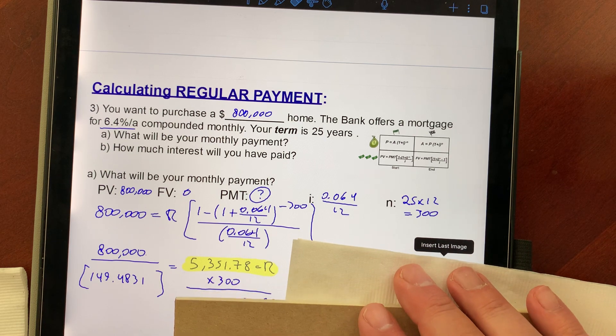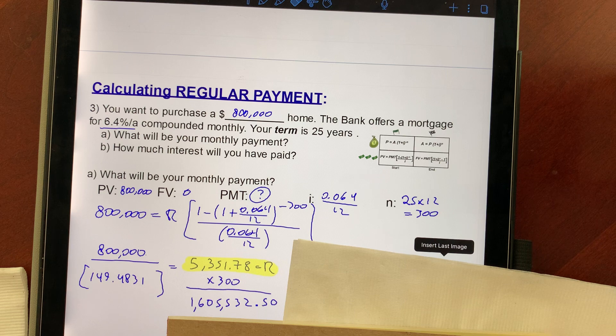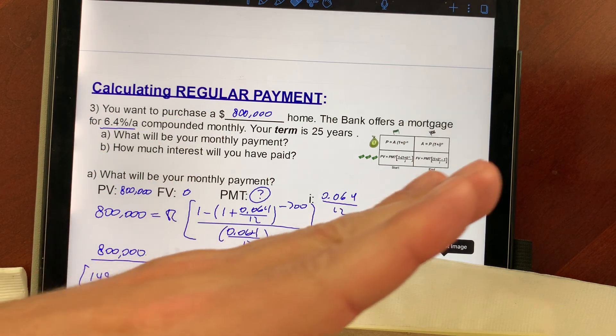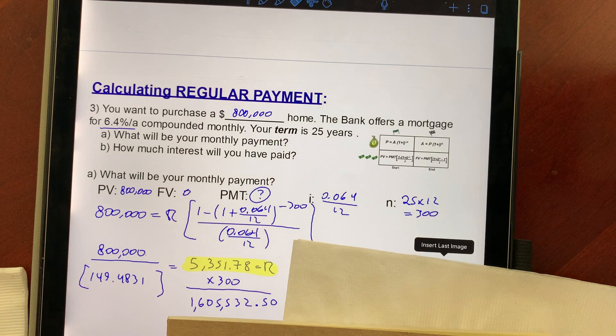So if you multiply by 300, it's $1.6 million. So you borrowed $800,000, but because, remember how exponential function is going to go up? And this time it works completely against you, because you're borrowing a very big chunk of money. You're leaving it there for a very long time. So it allows the interest to kind of go up.